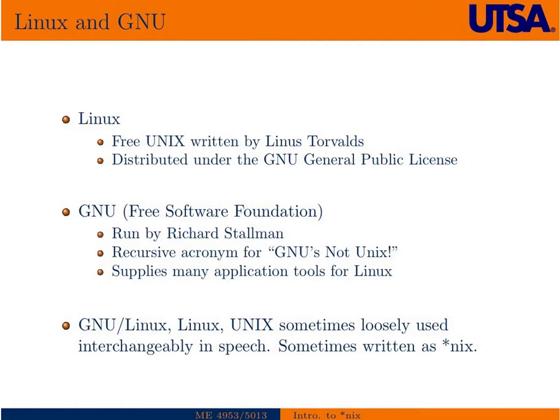Later on, in the 90s specifically, Linux and GNU took off. Linux is a free Unix written by Linus Torvalds. These names are important because they'll come up again — they are quite famous in computer science and specifically in the open source movement. Linux is distributed under the GNU General Public License. GNU, also known as the Free Software Foundation, is run by a guy named Richard Stallman.